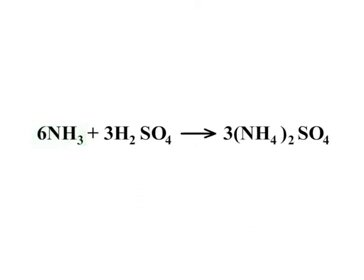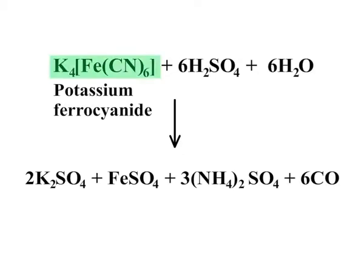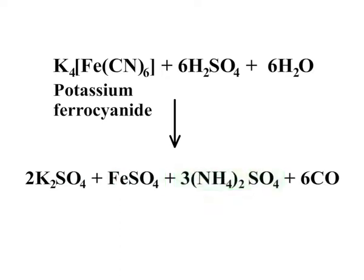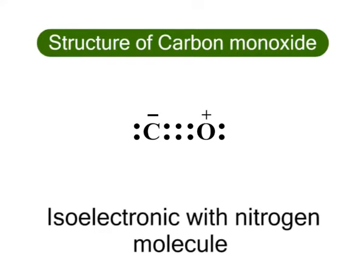6 moles of formic acid decomposes to 6 moles of water and 6 moles of carbon monoxide. 6 moles of ammonia reacts with 3 moles of sulfuric acid to form 3 moles of ammonium sulfate. Therefore, the overall reaction can be written as potassium ferrocyanide plus 6 moles of sulfuric acid plus 6 moles of water equals 2 moles of potassium sulfate plus ferrous sulfate plus 3 moles of ammonium sulfate plus 6 moles of carbon monoxide.